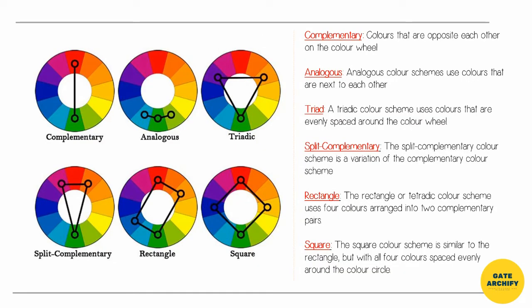These are different types of color schemes. First is complementary colors—colors that are opposite to each other. Analogous colors use colors that are next to each other. Tetraedic colors are evenly spaced around the color wheel.